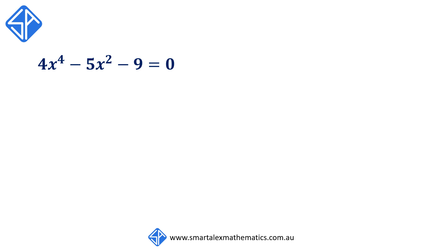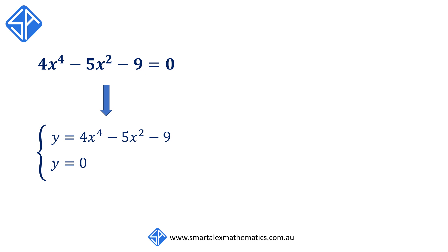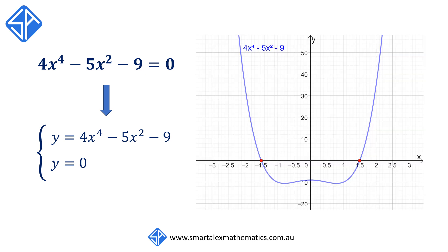To understand this, let's look at the simultaneous equations we're solving: y equals 4x to the 4 minus 5x squared minus 9, and y equals 0, which is the x-axis. Looking at the graph, this quartic graph only intersects the x-axis at two points, negative 1.5 and 1.5, which corresponds to our two solutions x equals plus or minus 3/2.